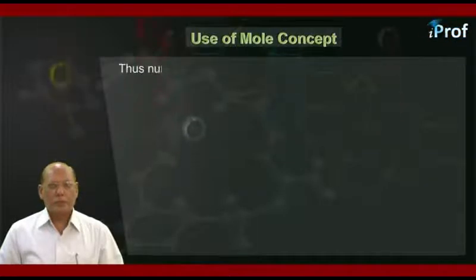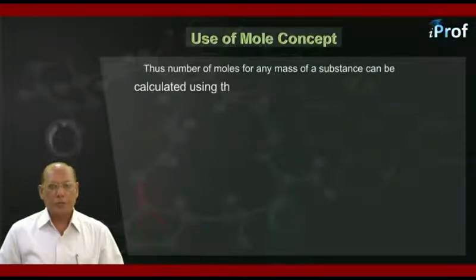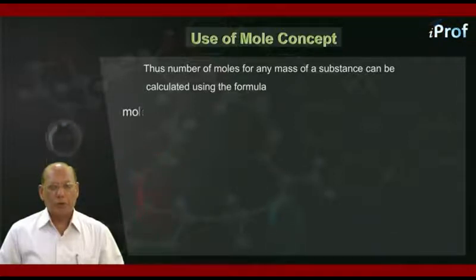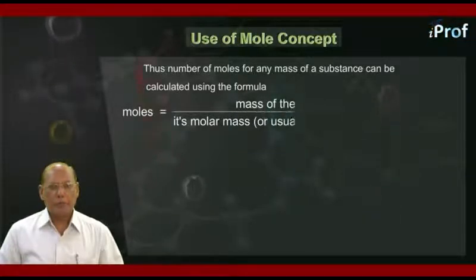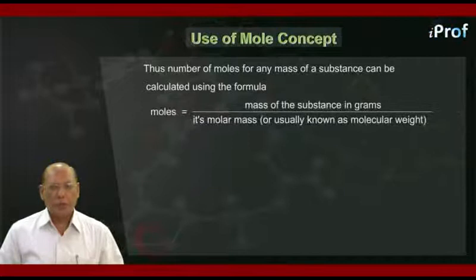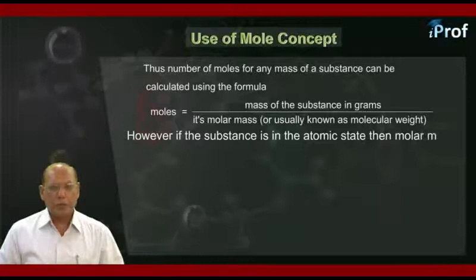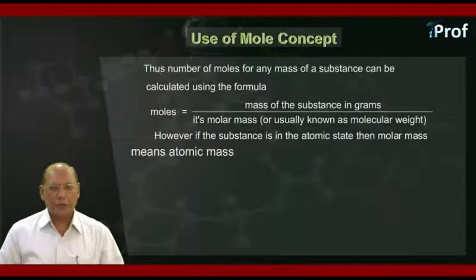Thus, the number of moles of any mass of a substance can be calculated using the formula: moles = mass of the substance in grams divided by its molar mass, also known as molecular weight. However, if the substance is in the atomic state, then molar mass means atomic mass or atomic weight.